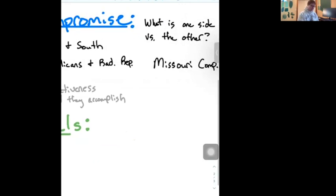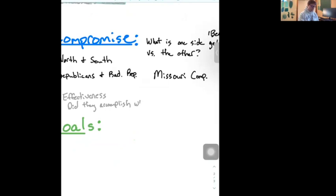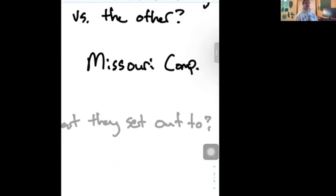So, when we look at compromises, we can look at them in terms of not only what were they, okay, but also we can look at them in terms of their effectiveness. Did they accomplish what they set out to?